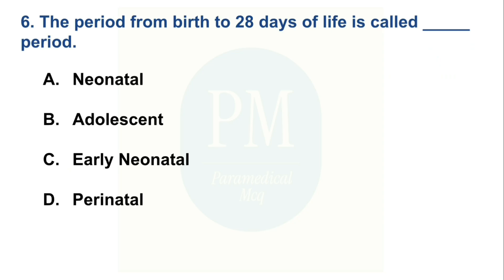The period from birth to 28 days of life is called the dash period. Option A: Neonatal, Option B: Adolescent, Option C: Early Neonatal, Option D: Perinatal. The correct option is Option A, Neonatal.